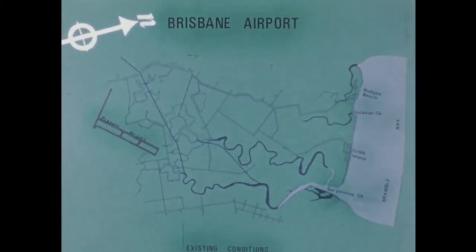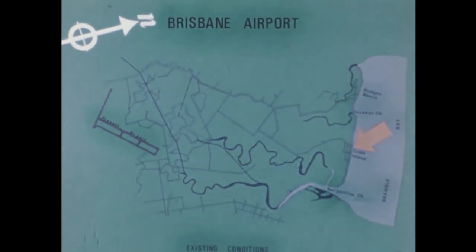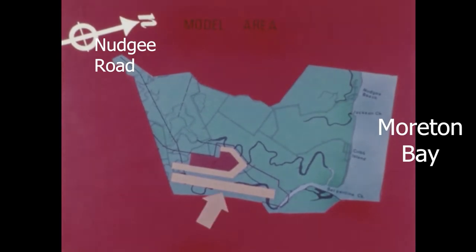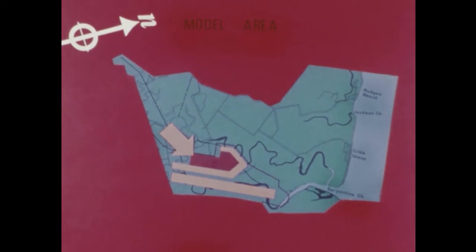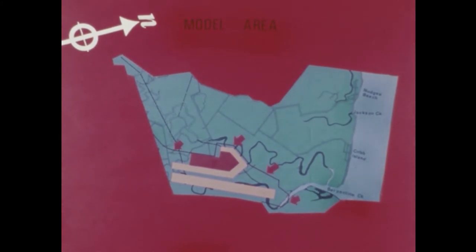Parts of particular interest in this film are the present airport, Nudgee Beach, Jackson Creek, Cribb Island and Serpentine Creek, which are the main outlets for floodwaters from northwestern suburbs. The main runway and its accompanying terminal area and aircraft parking aprons are constructed over Serpentine Creek, resulting in an increase in flood levels below Nudgee Road.